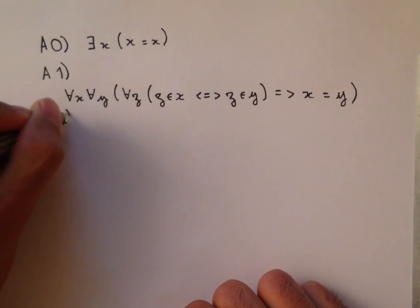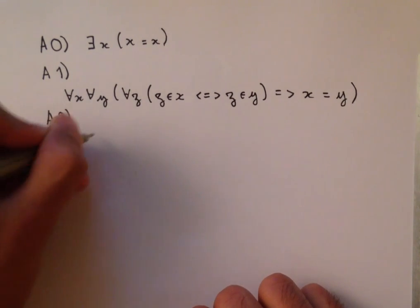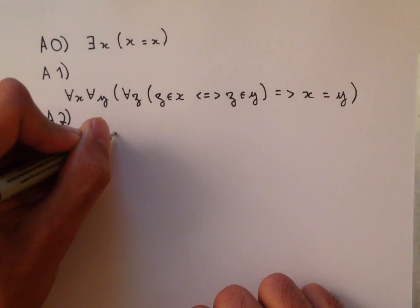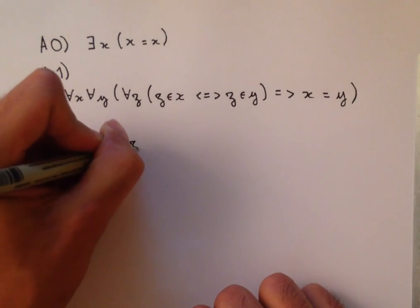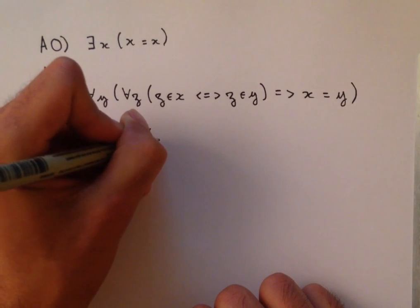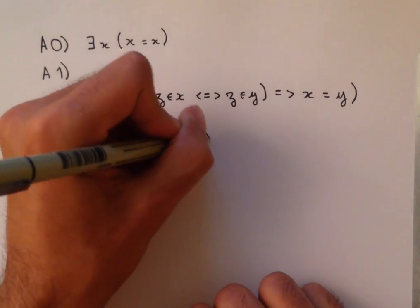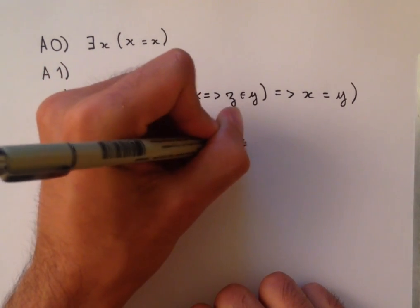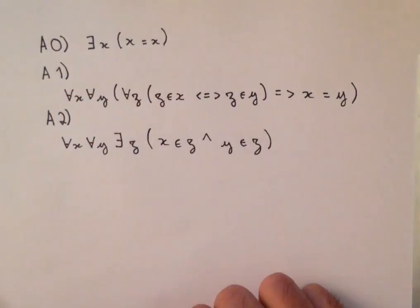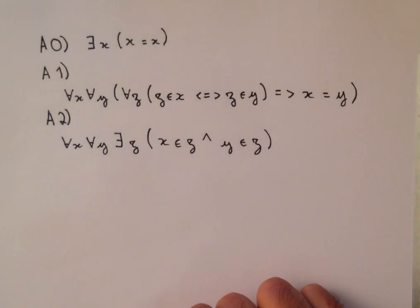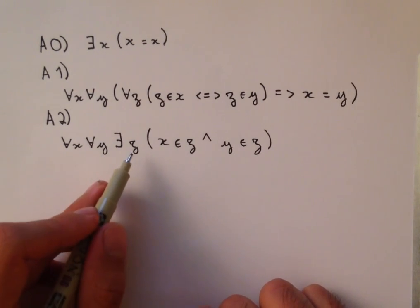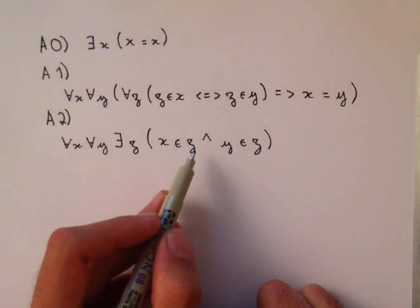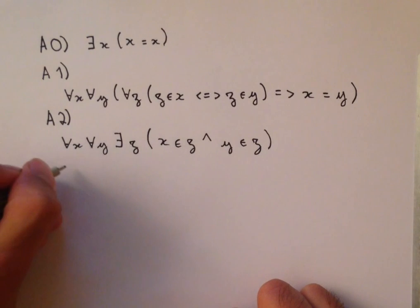The next axiom we're going to look at is the pairing axiom. For all x and for all y, there exists z such that x is in z and y is in z.